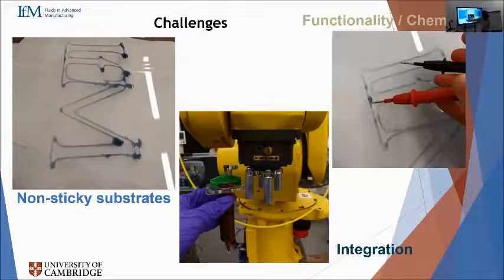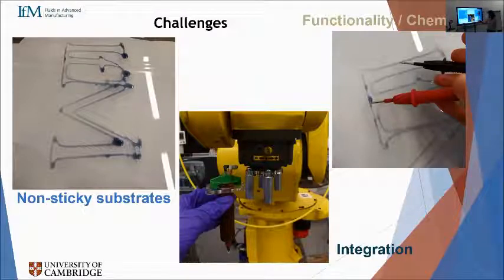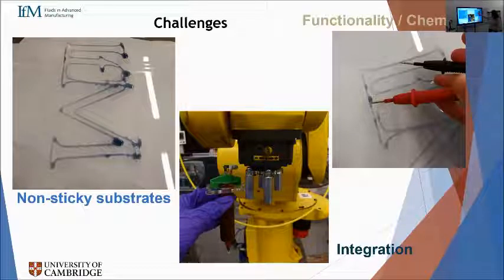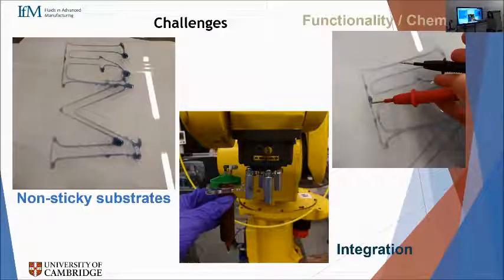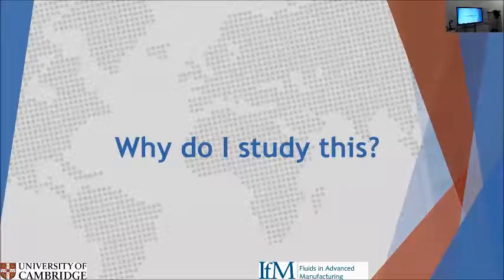There are more challenges: what happens when your substrate is not sticky enough? What should we do in terms of drying the ink? What happens when you need a specific functionality, in terms of chemistry? And what happens when you need to integrate these devices into a robotic arm or a larger system?